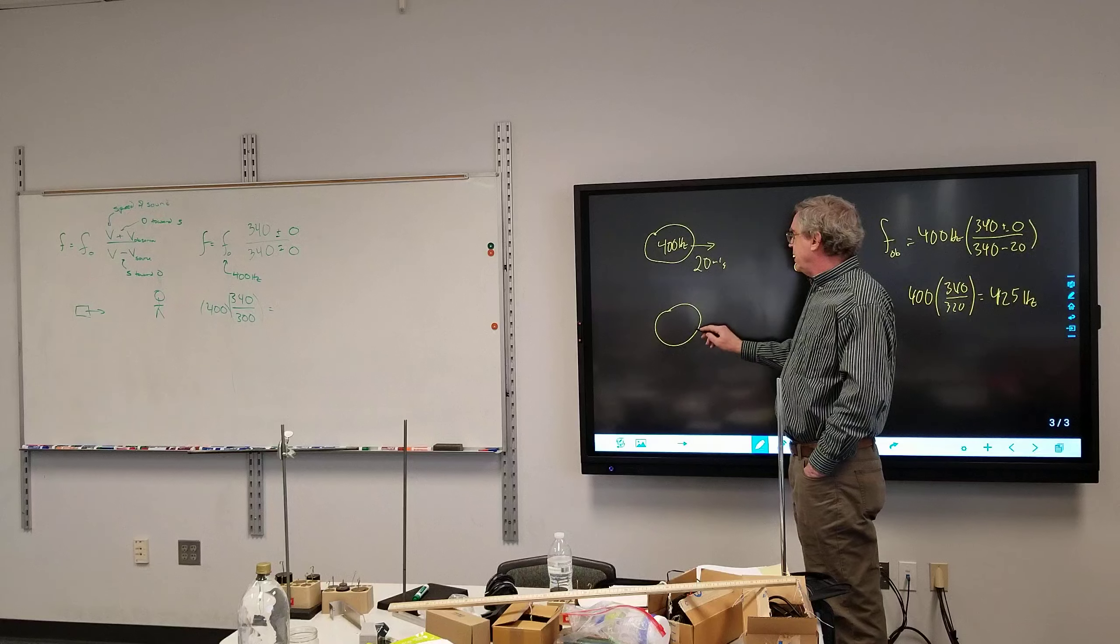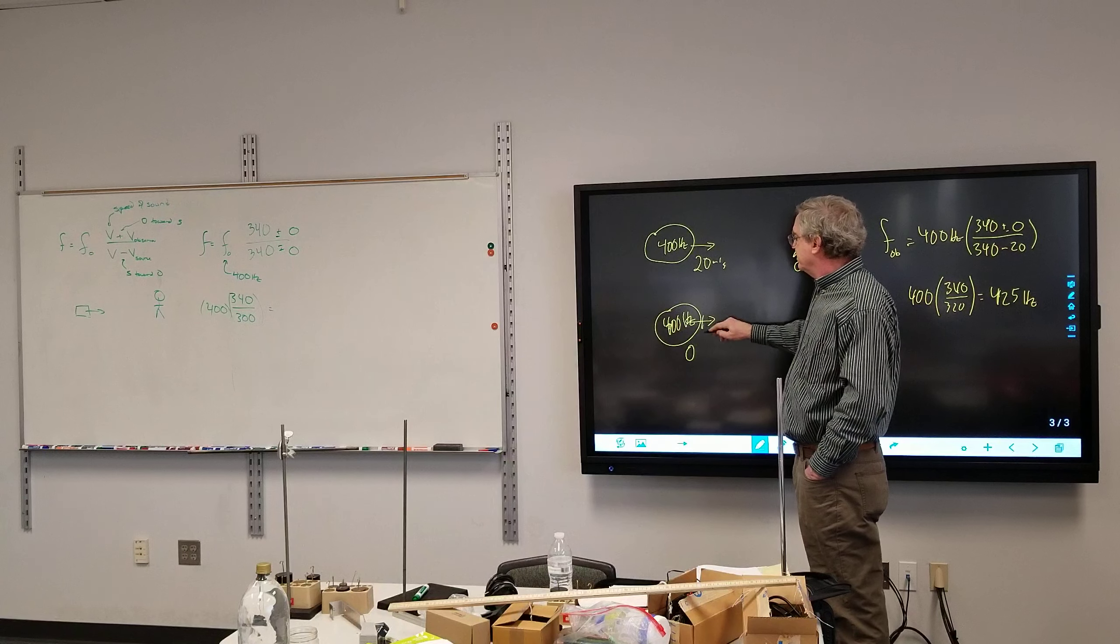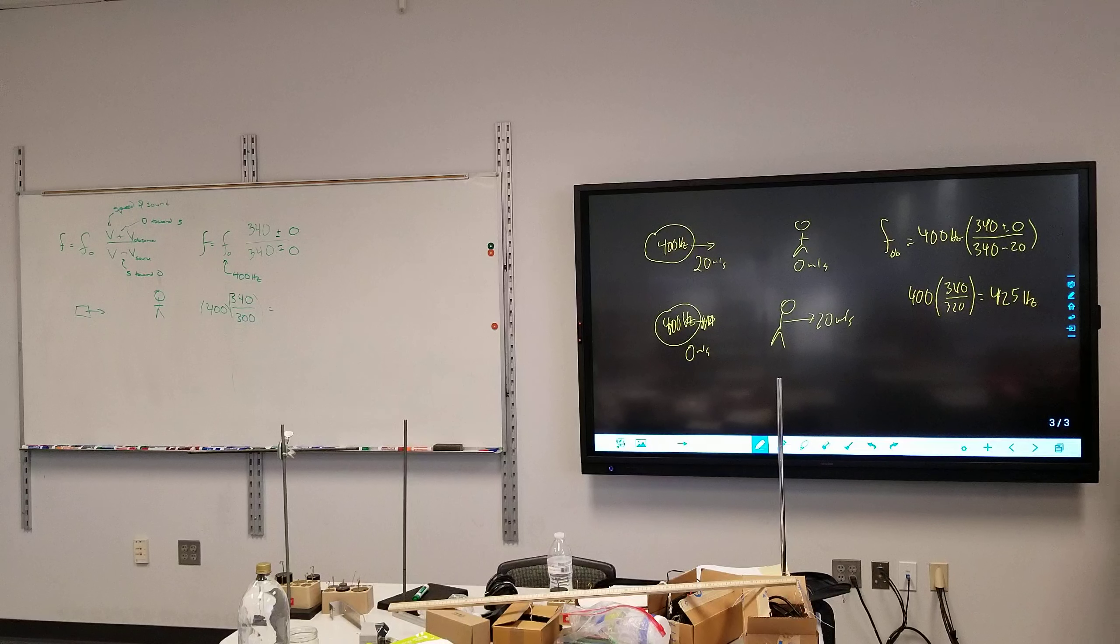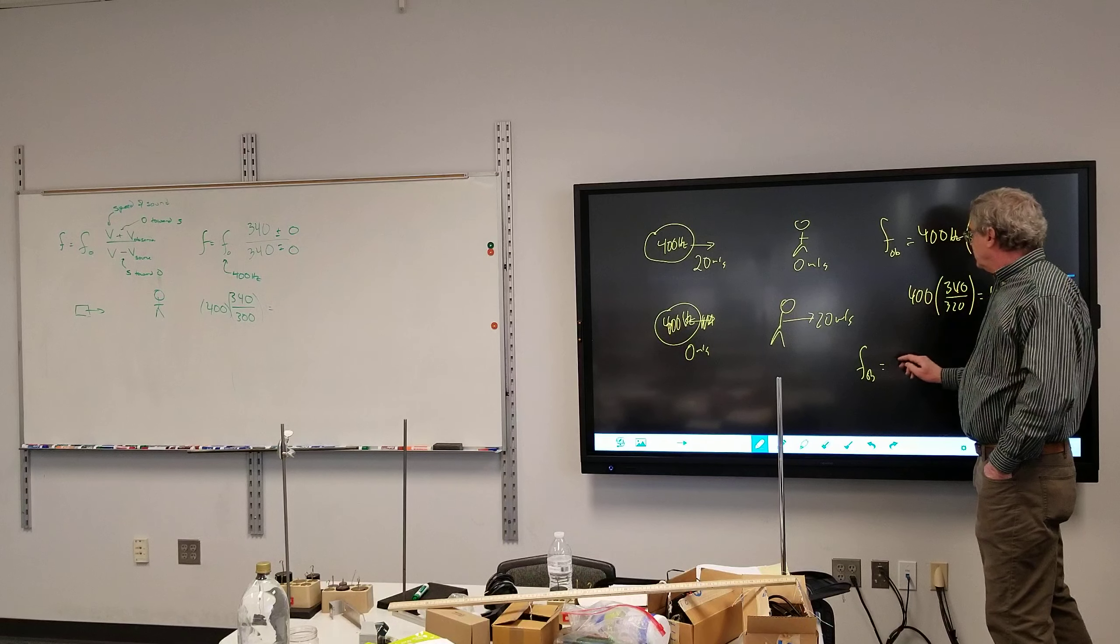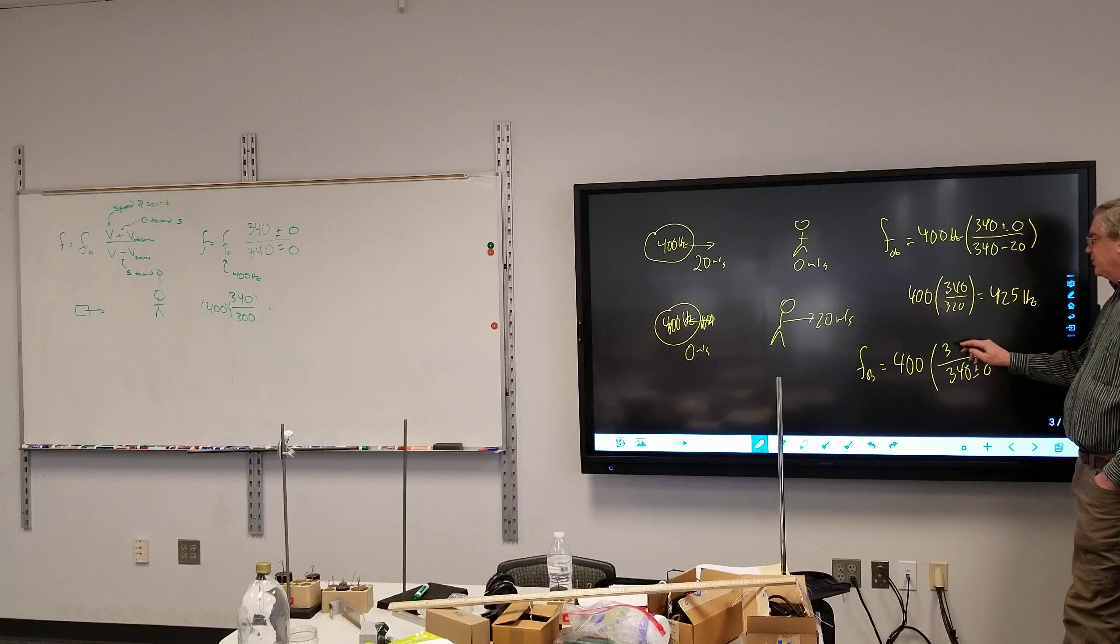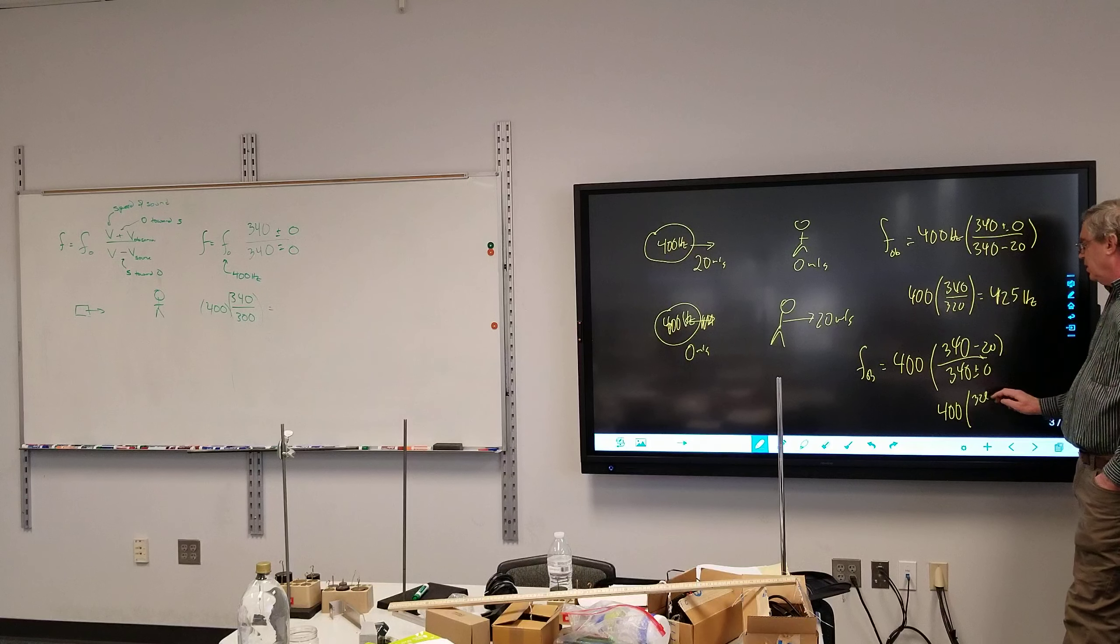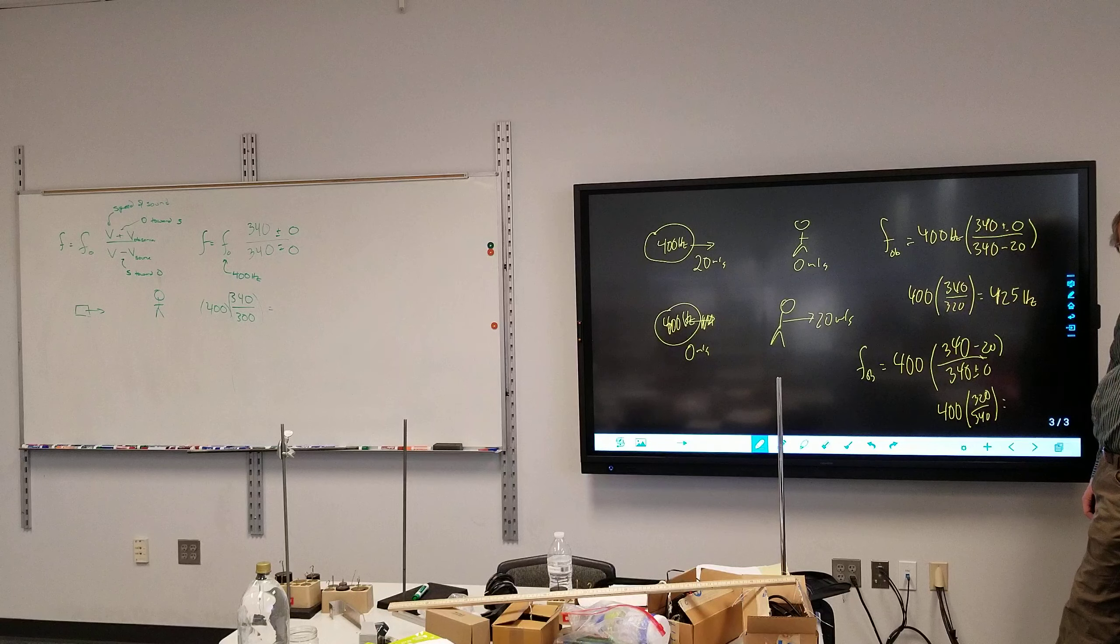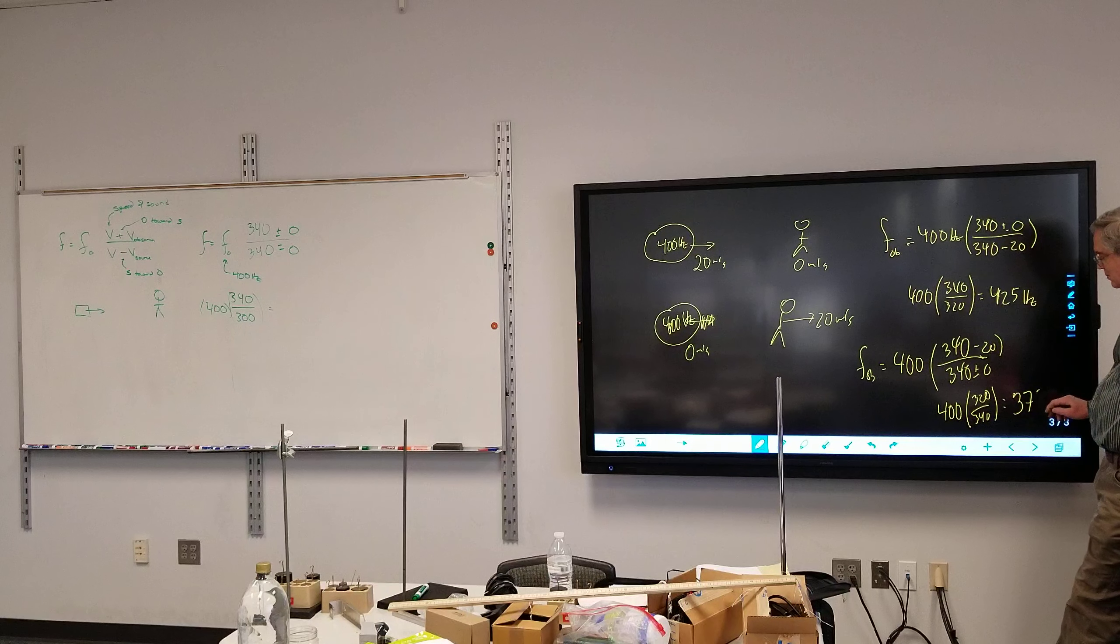If we now have the car staying still. Still 400 hertz. And this time the observer is going away at 20 meters per second. Well, if the observer is going away at 20 meters per second, higher frequency or lower frequency? And so the frequency observed is going to be 400 times, well, the source isn't moving, so that's 340 plus or minus zero. And on top, 340, I want this to be a smaller number, so minus 20. So we end up with 400 times 320 over 340, which gives us something magical. 376.